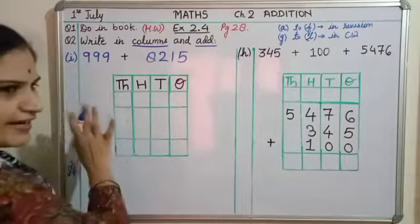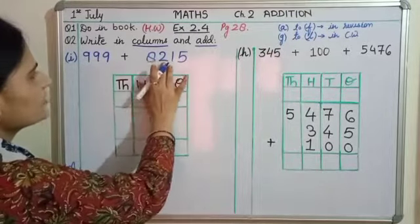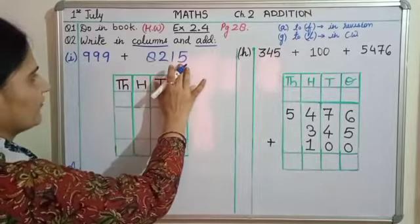So which columns are we talking about? When we have to do addition, these are columns - these are the place value chart columns. So let us have a place value chart. The question, part (i) I have taken, it is 999 plus 8215. We will first arrange this in columns, then we have to add.